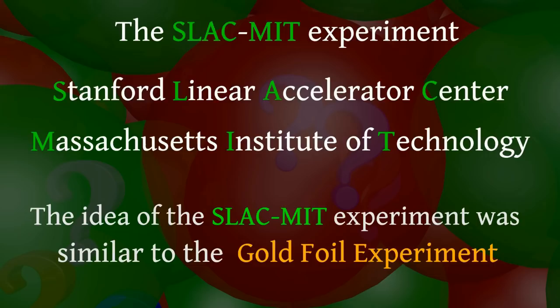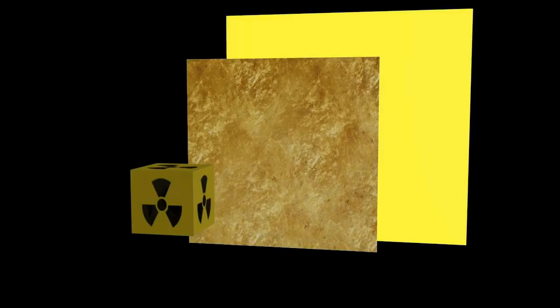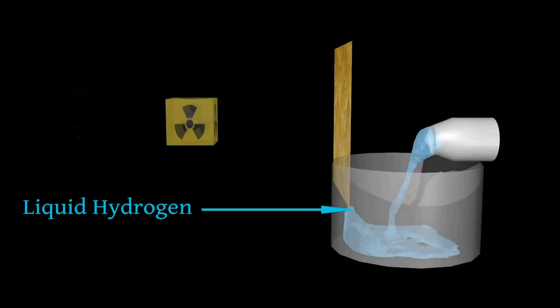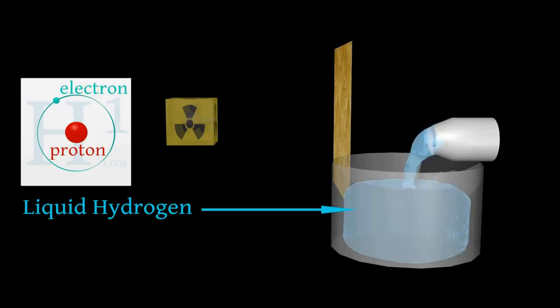Let's begin with the target — the object of investigation. In the gold foil experiment it was a gold foil. In the SLAC-MIT experiment it was changed to a cylinder, 7 cm, with liquid hydrogen. Hydrogen consists of 1 proton and 1 electron far beyond from the proton, so we have a lot of protons. As hydrogen is liquid, under very low temperature, all protons are very close to each other.